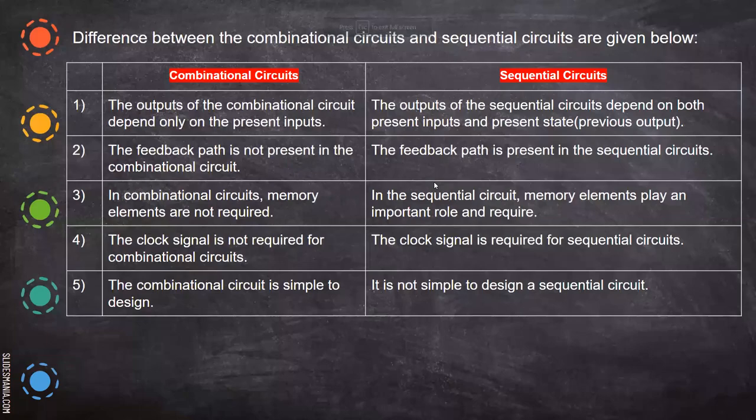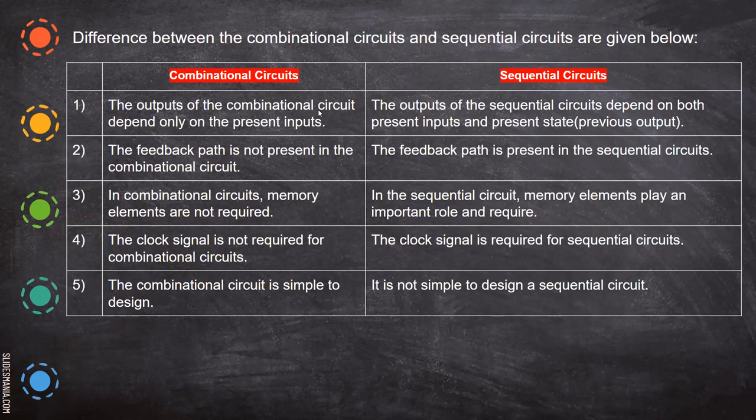Now we'll see the difference between combinational circuits and sequential circuits. The first one: the output of combinational circuits depends only on the present input. The output of sequential circuits depends on both present inputs and present state, as well as previous output. The feedback path is not present in combinational circuits.